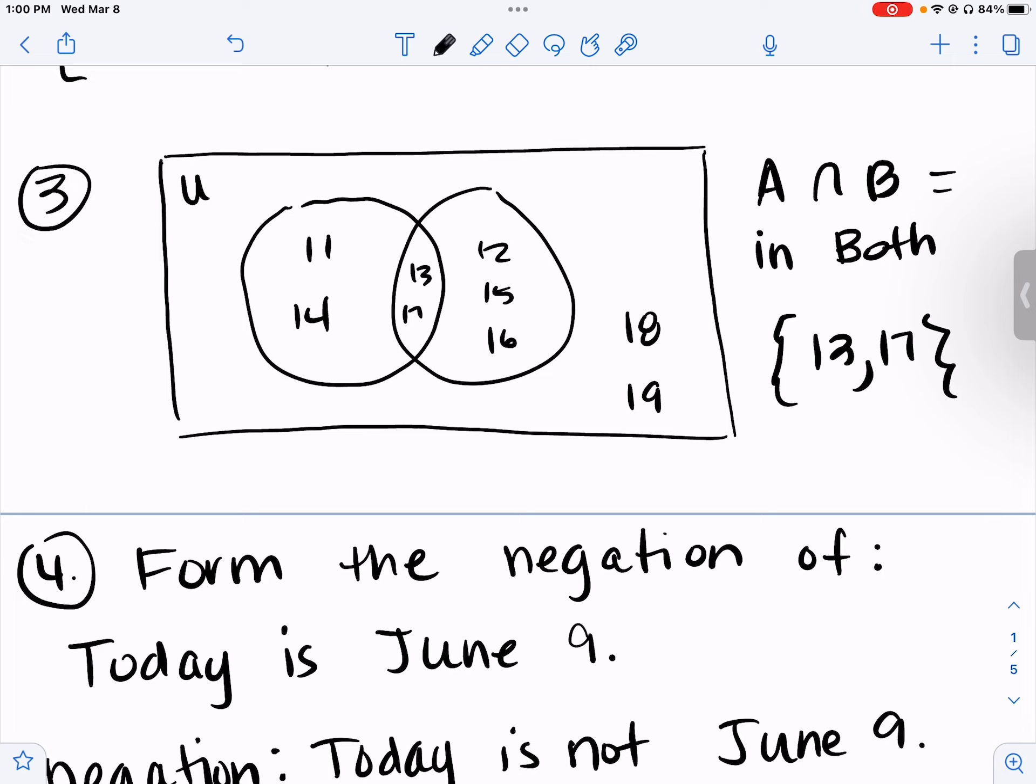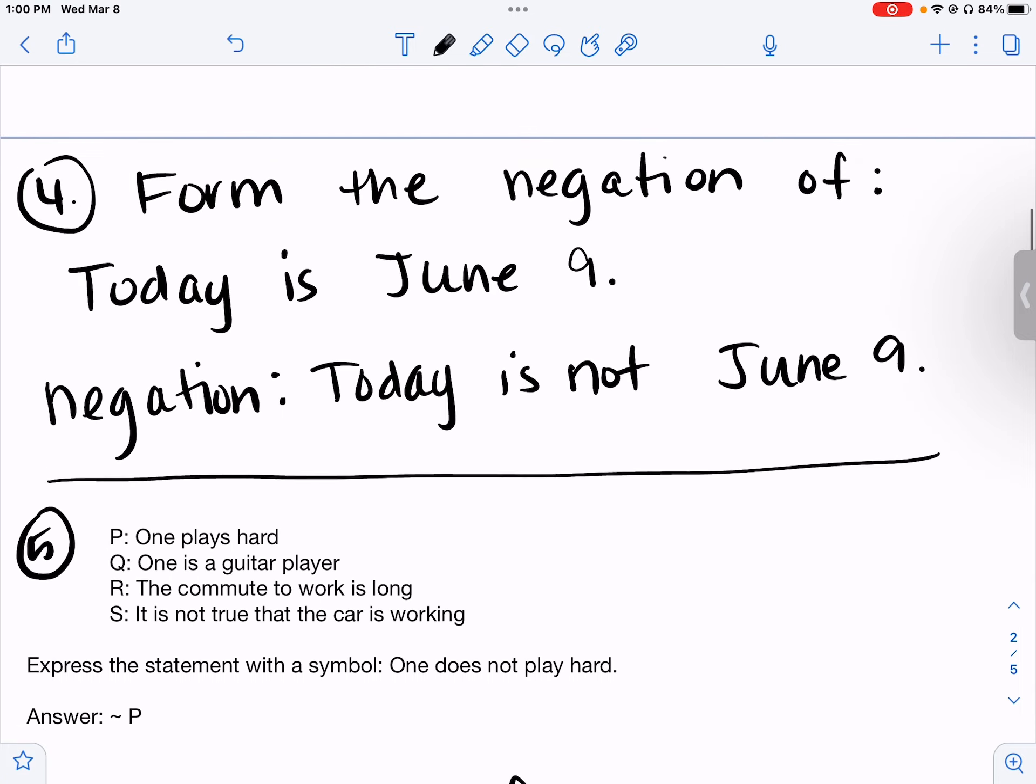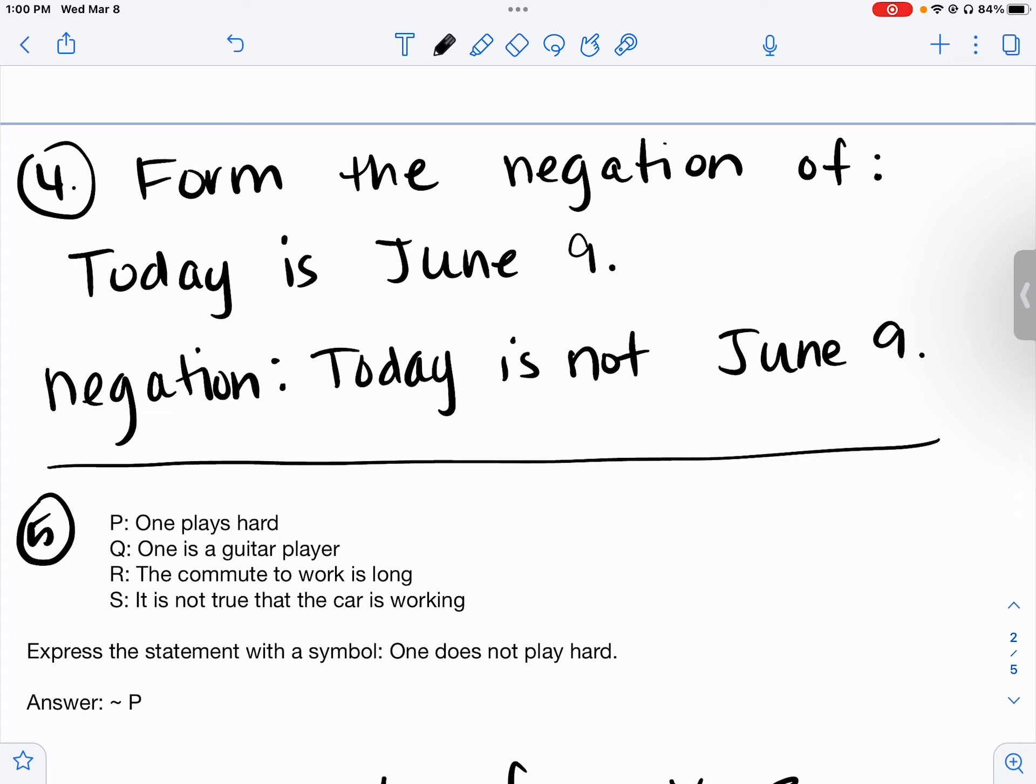A intersection B means where they overlap, what's inside both circles, which is 13 and 17.